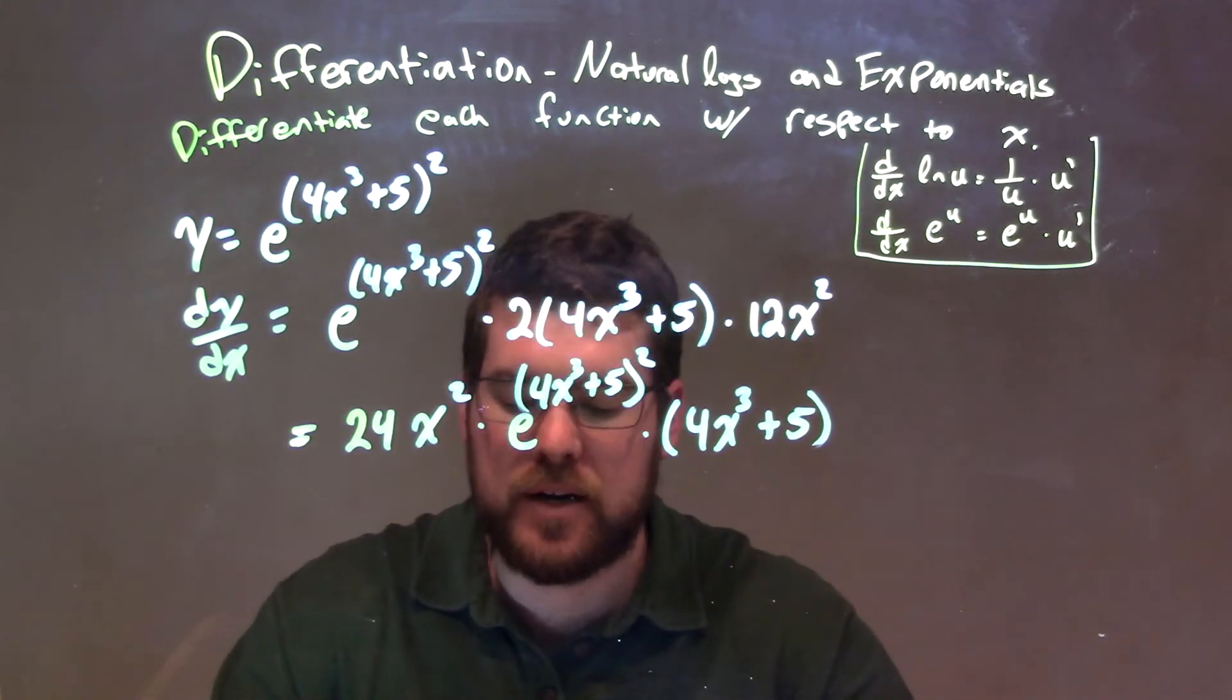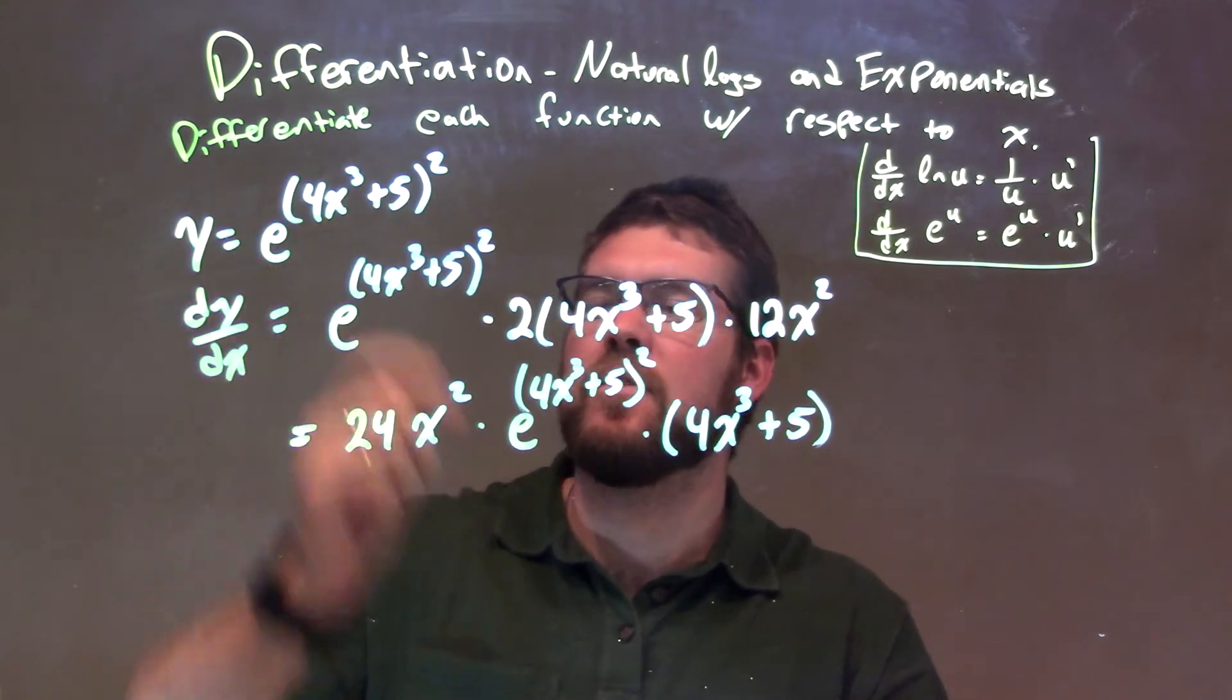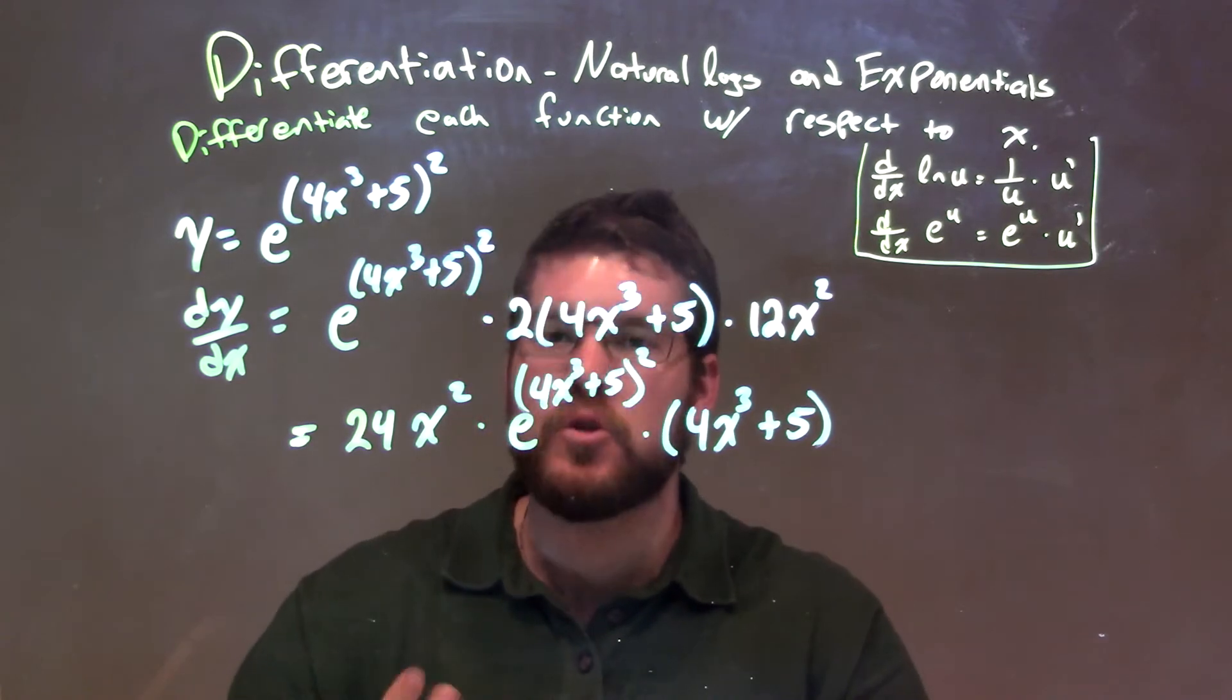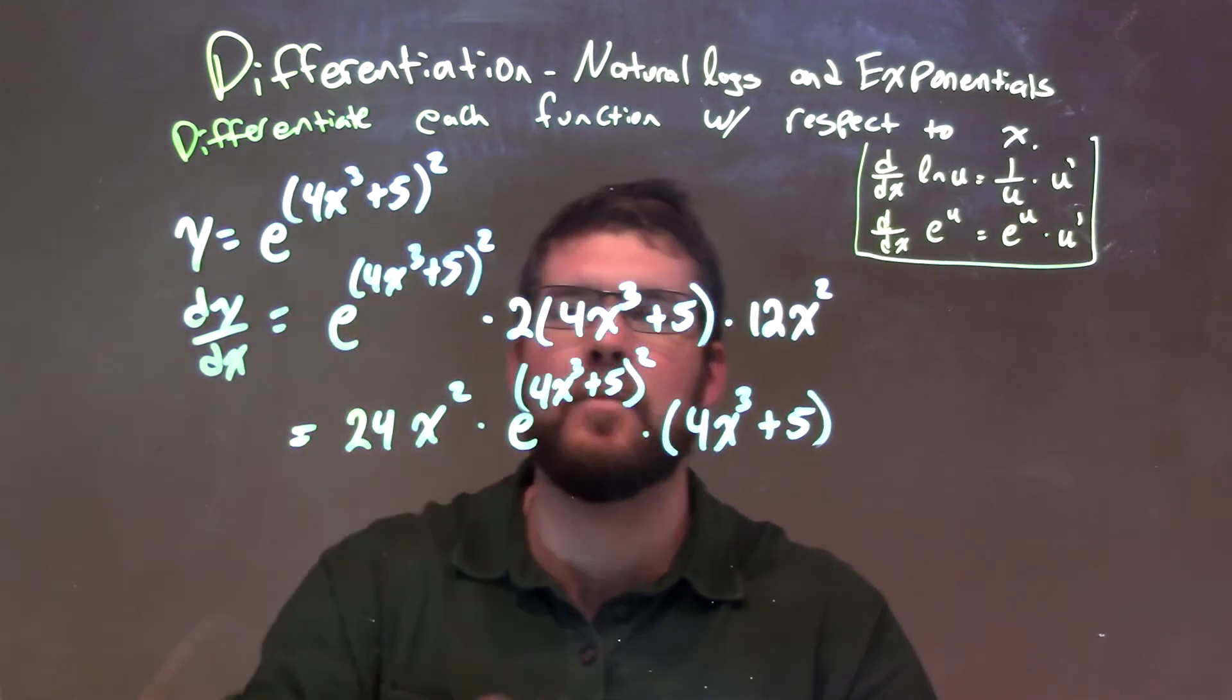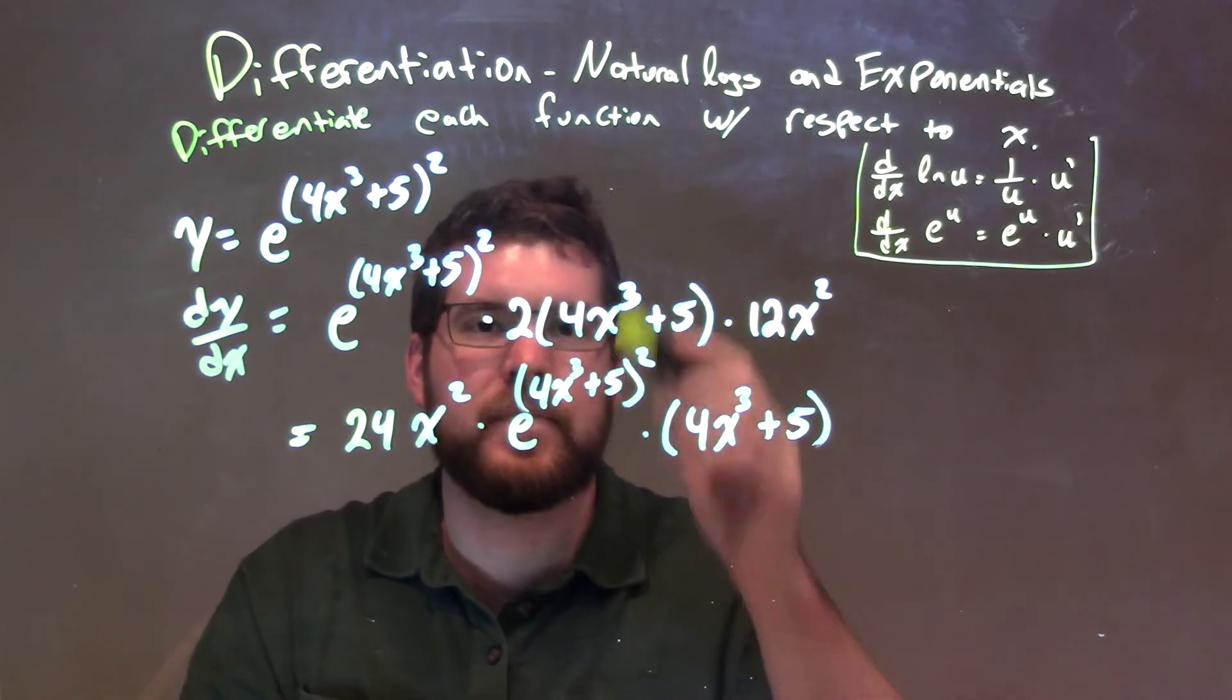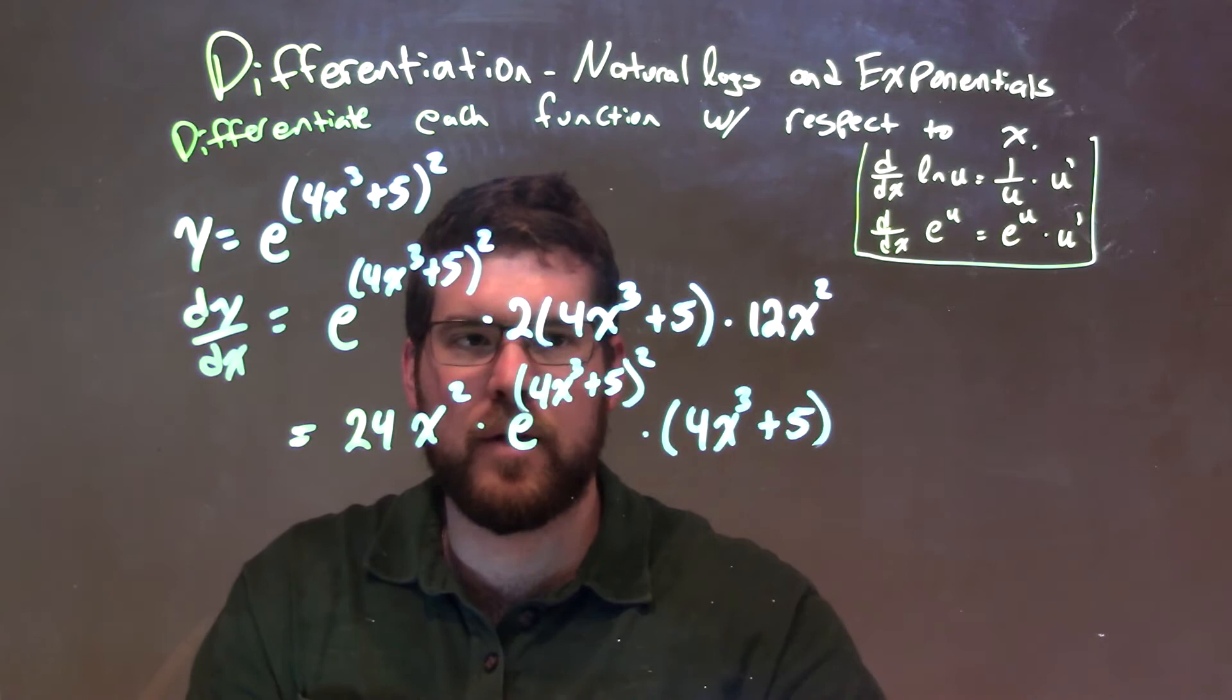But again, this is our final answer. So let's bring it down. We bring y equals e to the power of 4x to the third plus 5, all of that squared. Well, derivative of e to the u is e to the u times u prime, so we keep e to the u, this whole thing the same, times the derivative of the exponent. The derivative of the exponent has its own layer of the chain rule. 2 comes down out front, keep the inside of that parenthesis the same, times the derivative of what's inside the parenthesis.